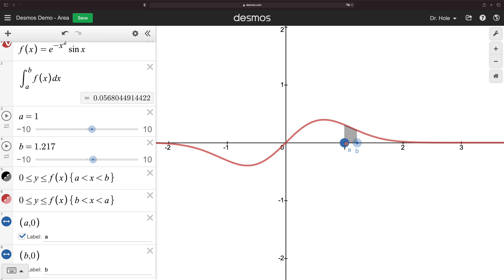What happens when we take a over here? We're not getting any type of shading, and that's because there are no y's which are bigger than zero, but less than the function, like there are over here. So let's fix that.